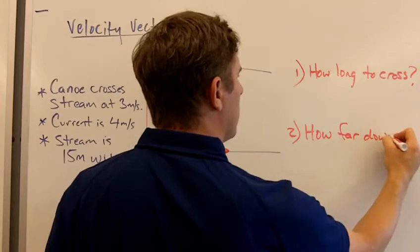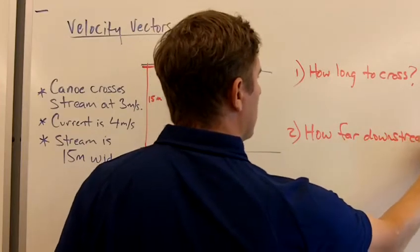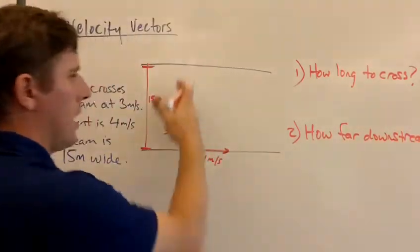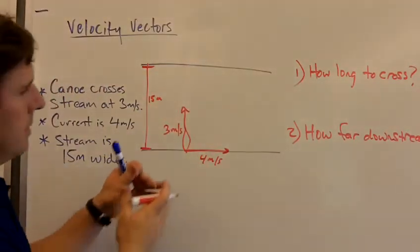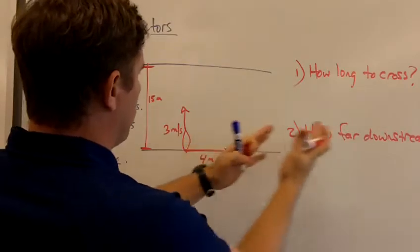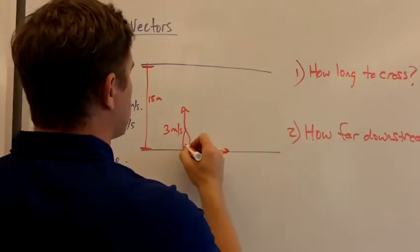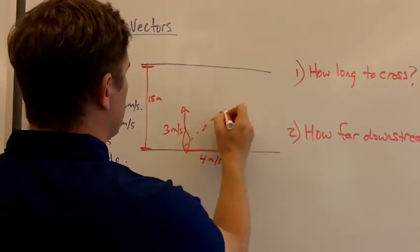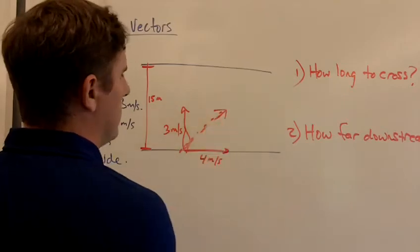We also want to ask how far downstream is the canoe when it lands on the opposite shore? Because we get an idea here that the canoe is going to be paddling straight across, but it's going to drift downstream. So we're going to end up with some kind of resultant velocity that's going to take us in this direction.